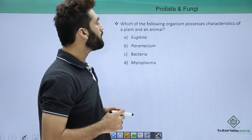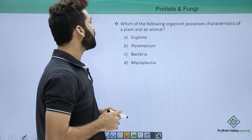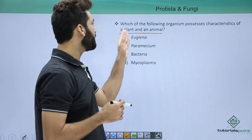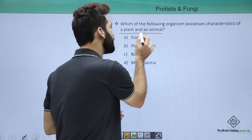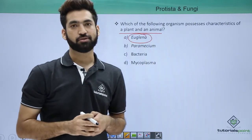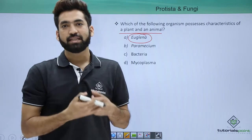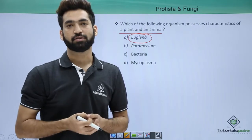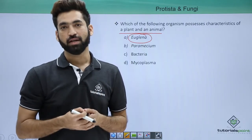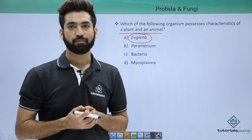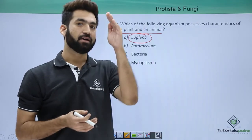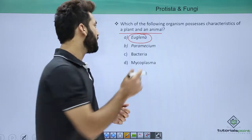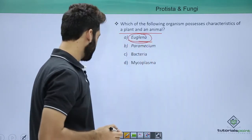Which organism possesses characteristics of both a plant and an animal? The answer is Euglena, also called a plant-animal. It has chloroplasts so it can photosynthesize and make its own food — it is autotrophic, resembling a plant. However, it does not have a cell wall and undergoes longitudinal binary fission, which are animal-like characters. So Euglena is considered a plant-animal.